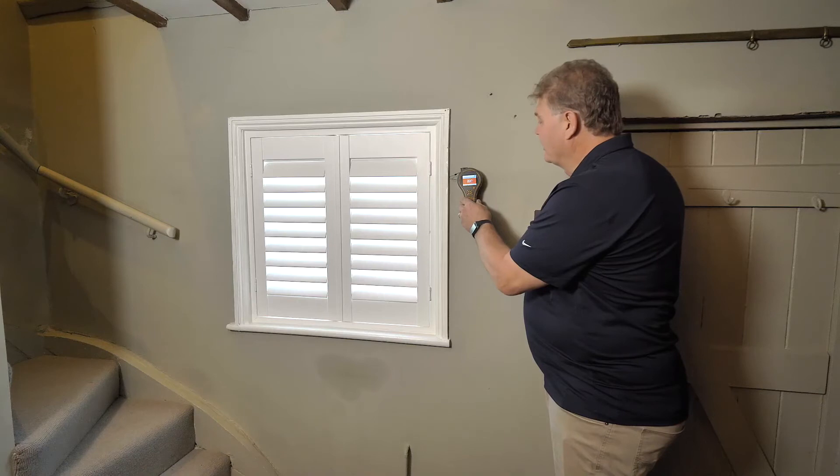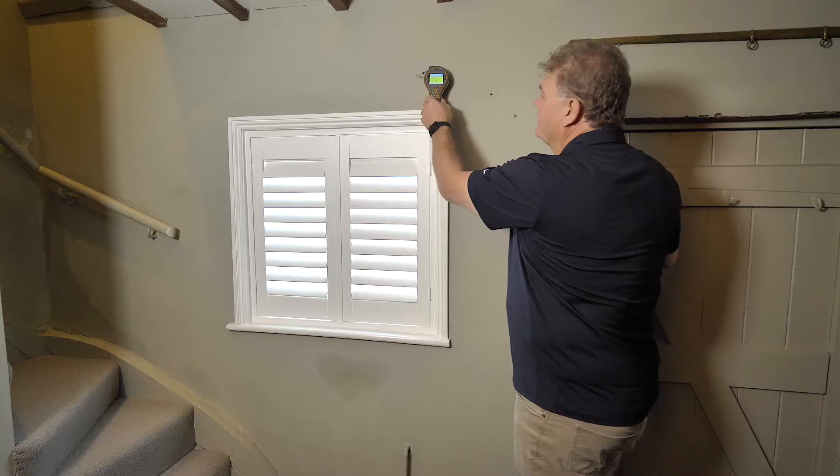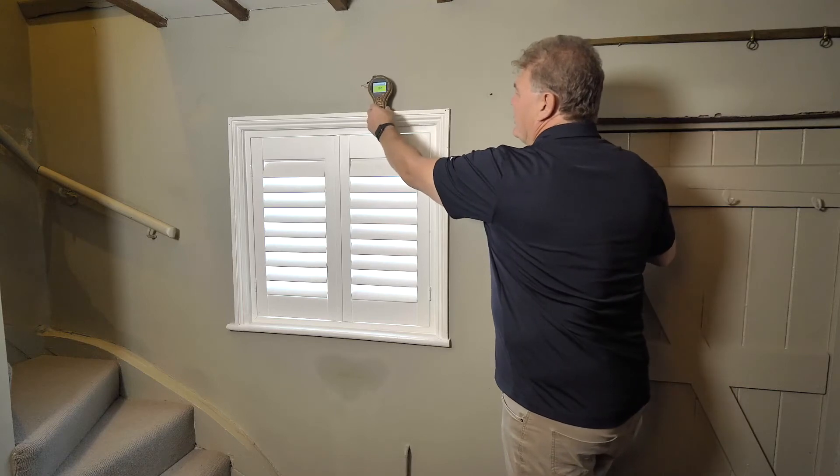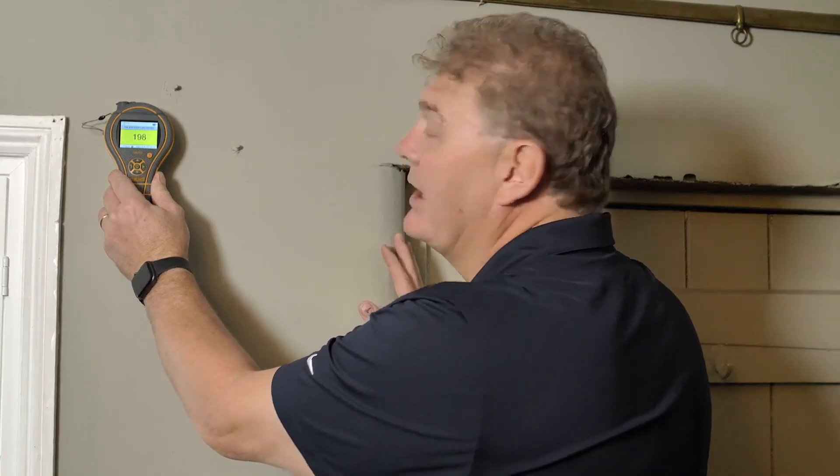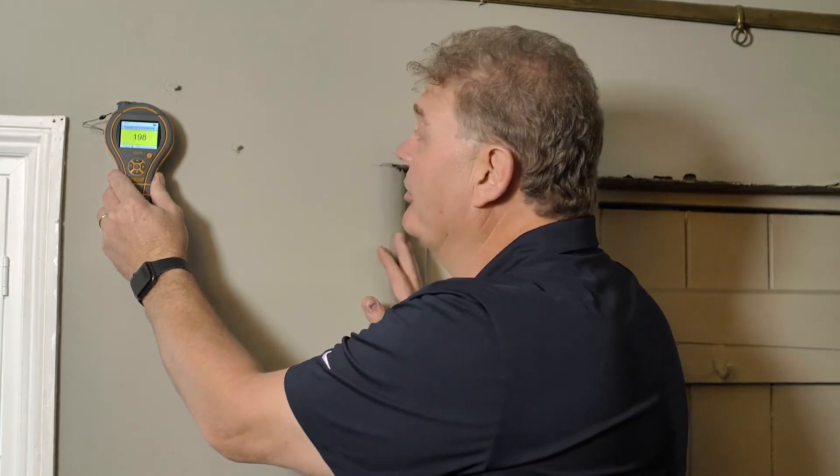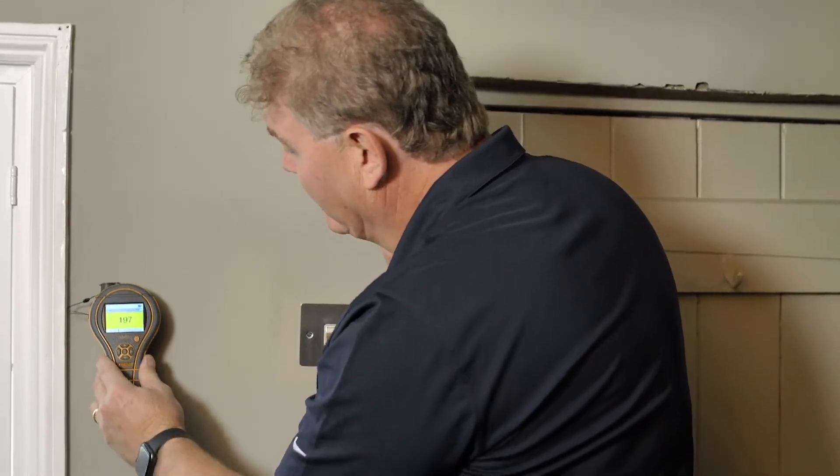We can apply it to the wall here and quickly scan by lifting and placing the meter in various areas. We'll start high up near the window, and we are getting elevated readings in the yellow region. As we move down, you can see that the readings are getting higher.